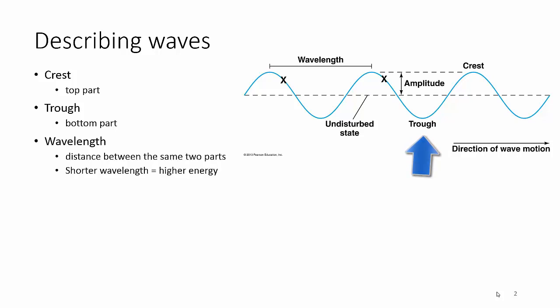A wavelength is the distance between two of the same parts. I like measuring it from top to top or bottom to bottom, and you can see wavelength is labeled top to top in the diagram.